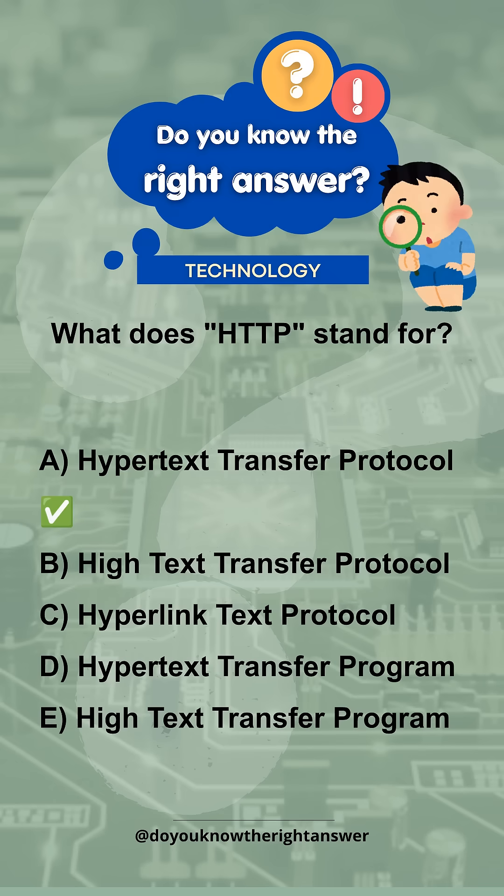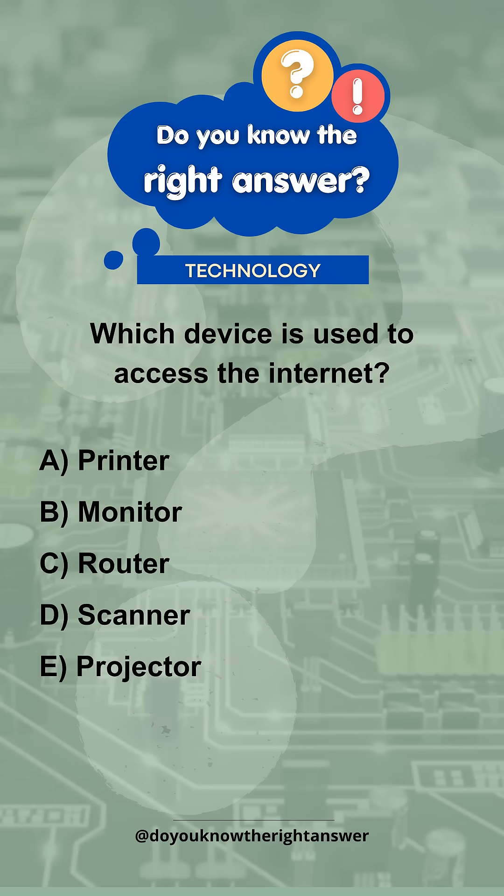Correct answer is A. Hypertext Transfer Protocol. Which device is used to access the Internet? A. Printer. B. Monitor. C. Router.